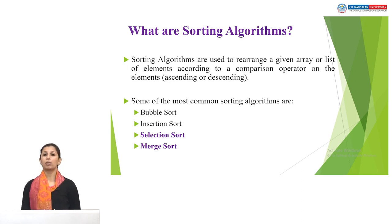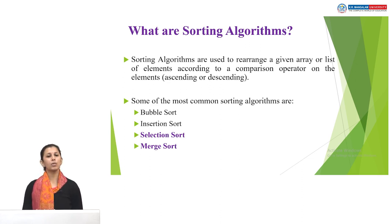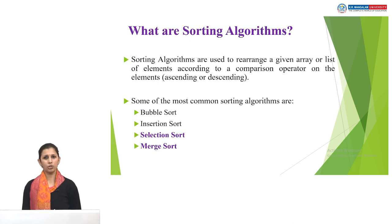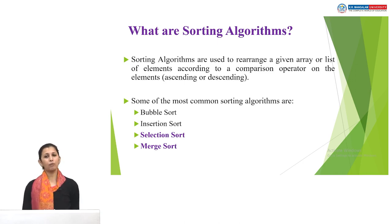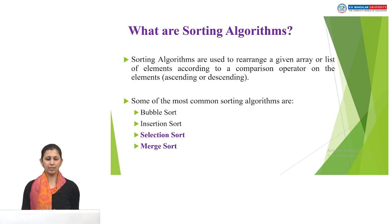We have different types of algorithms. Mainly there are four algorithms that we generally use. The first was bubble sort, where we compare two values. Then there was insertion sort. Today we will cover two more: selection sorting and merge sorting.